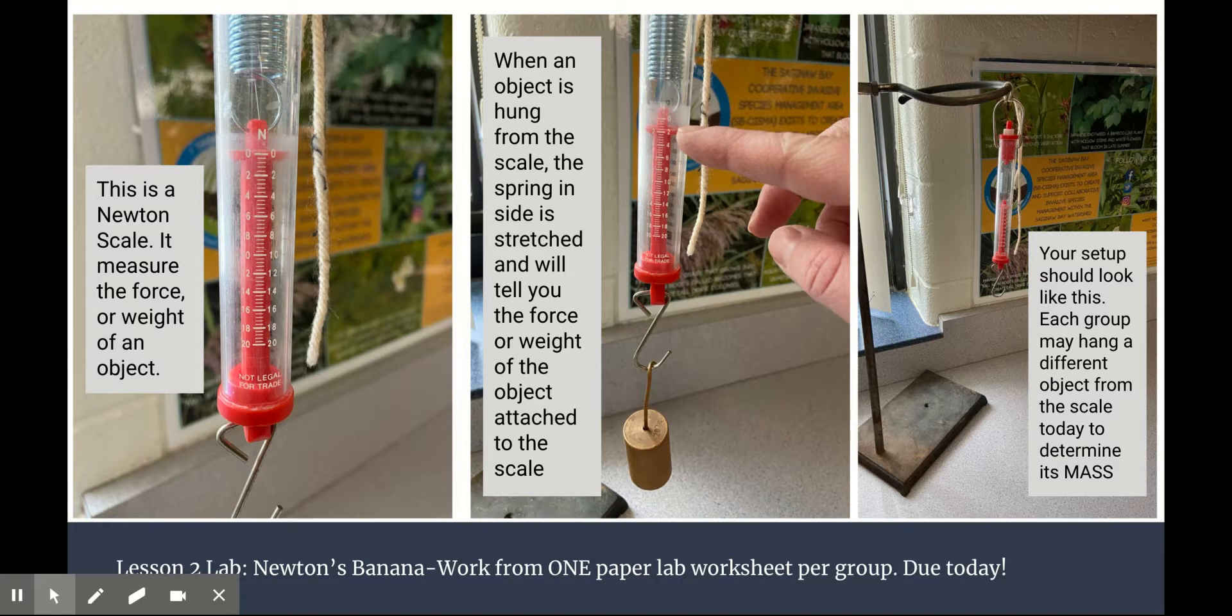You're going to design the lab to determine, using only a Newton scale, the mass of the object in kilograms. So you'll each get a setup similar to what you see in the picture. A Newton scale is very simple. It has a spring inside that's calibrated.